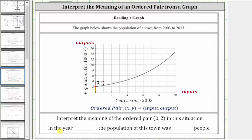So as a complete sentence, we can say this ordered pair means in the year 2003, the population of this town is 2,000.